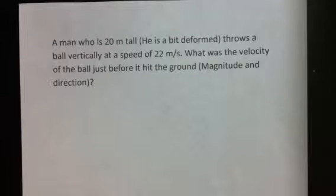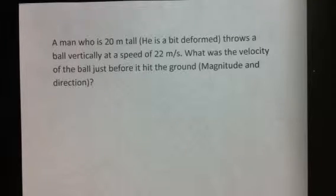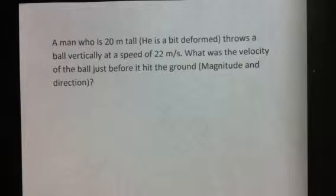Welcome to our continuing review of chapter 7. This will be the last problem in chapter 7 and it deals with trajectory problems. The problem states: a man whose arms are 20 meters above the ground throws a ball horizontally at a speed of 22 meters per second.